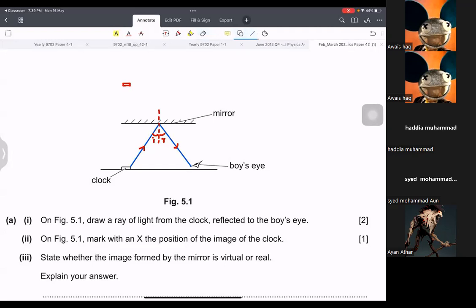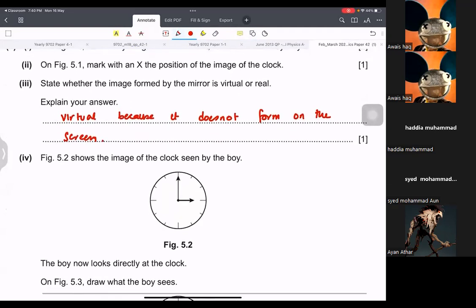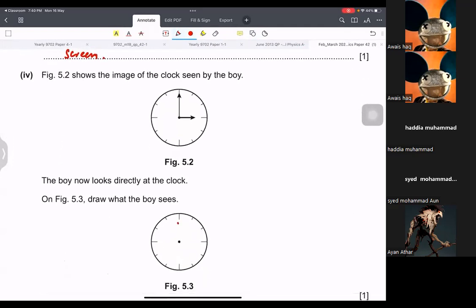We have to mark X. We don't have to draw the X. Now it says state whether the image formed of a mirror is virtual or real. So it is virtual because it does not form on the screen. That's why. Show the image of the clock seen by boy. Draw what boy sees. So it's going to be horizontally flipped. This arm is going to be like this and this arm is going to be like this. So you have to flip it horizontally.